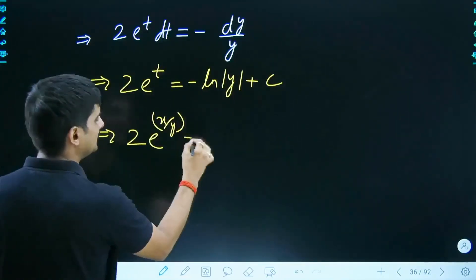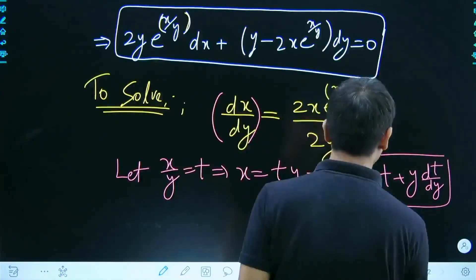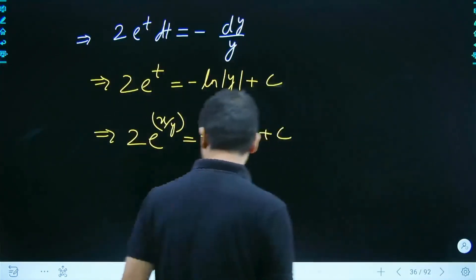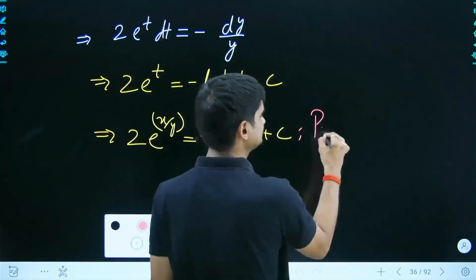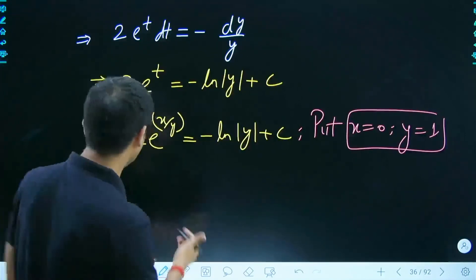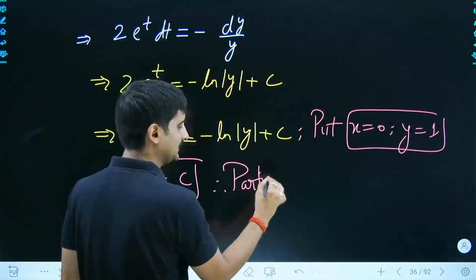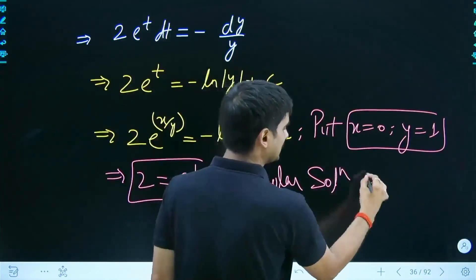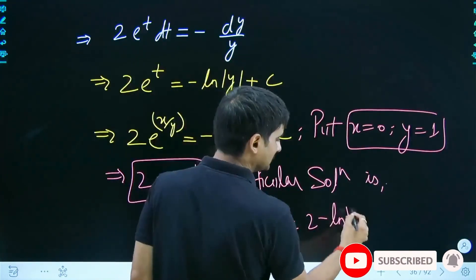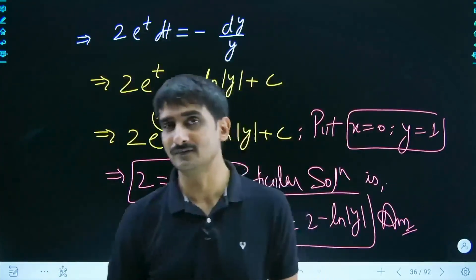Integrating both sides: 2e^t = −ln|y| + C, i.e., 2e^(x/y) = −ln|y| + C. For the particular solution, substitute x = 0, y = 1: 2e^0 = −ln|1| + C, so 2 = 0 + C, giving C = 2. Therefore the particular solution is 2e^(x/y) = 2 − ln|y|.